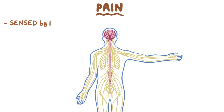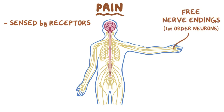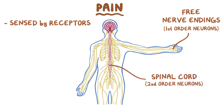Pain is sensed by receptors called free nerve endings, which are the first-order neurons in the pain pathway. These neurons send their axons to synapse with second-order neurons in the spinal cord, which carries the sensory information to the brain, and then you feel pain.